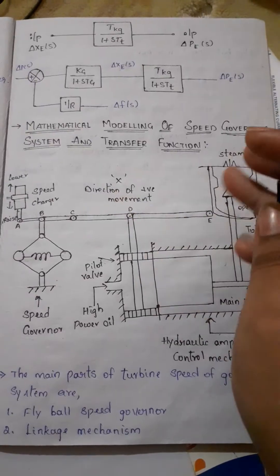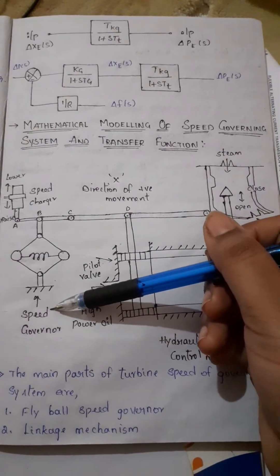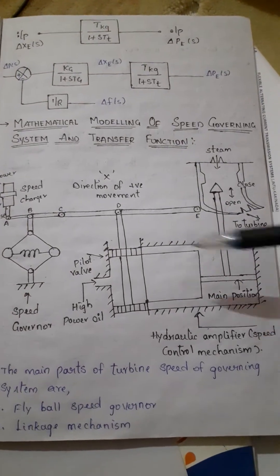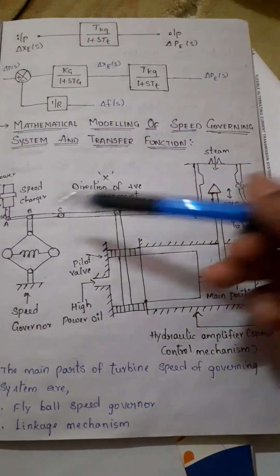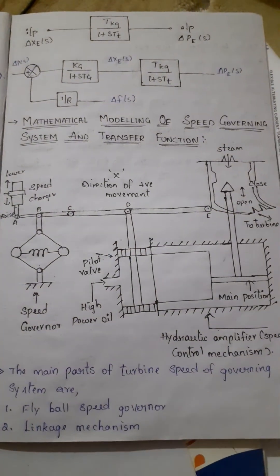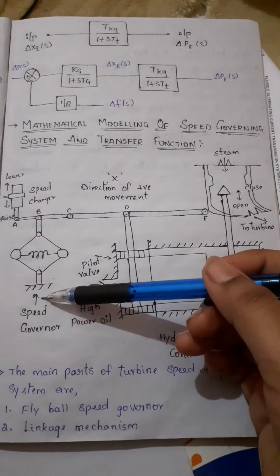I am going to explain the speed governing system. There are main four parts: fly ball speed governor, hydraulic amplifier, linkage mechanism, and finally the speed changer. First we will discuss the fly ball speed governor.